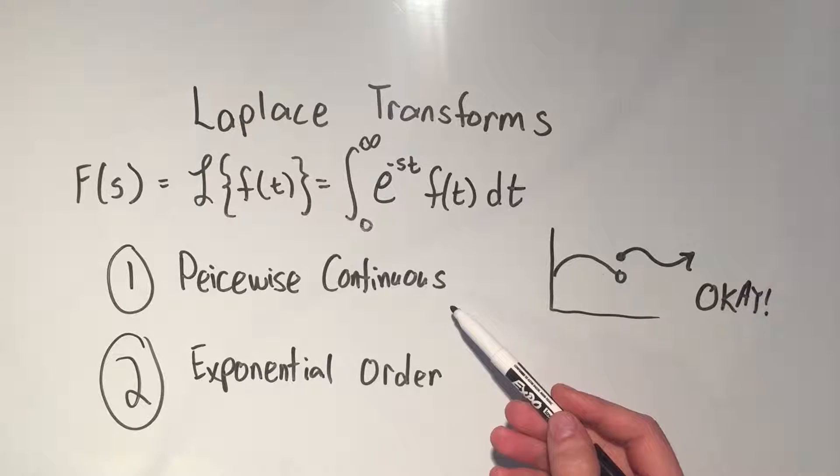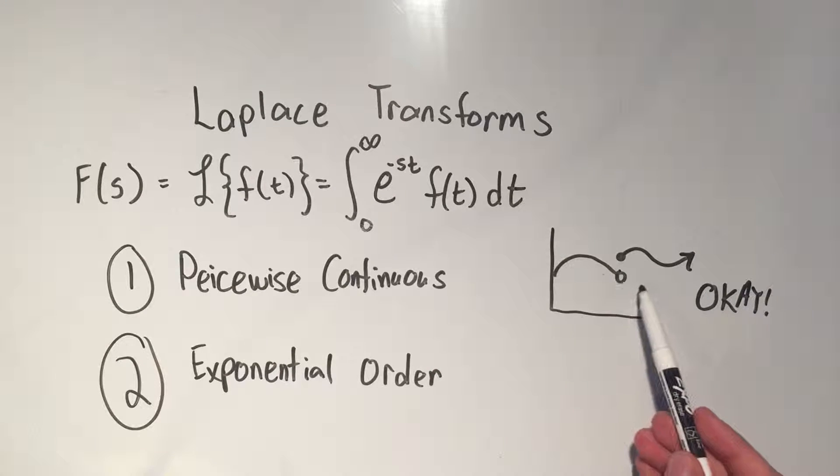The function has to be piecewise continuous. What does that mean? Well, it basically needs to be continuous except for jump discontinuities.